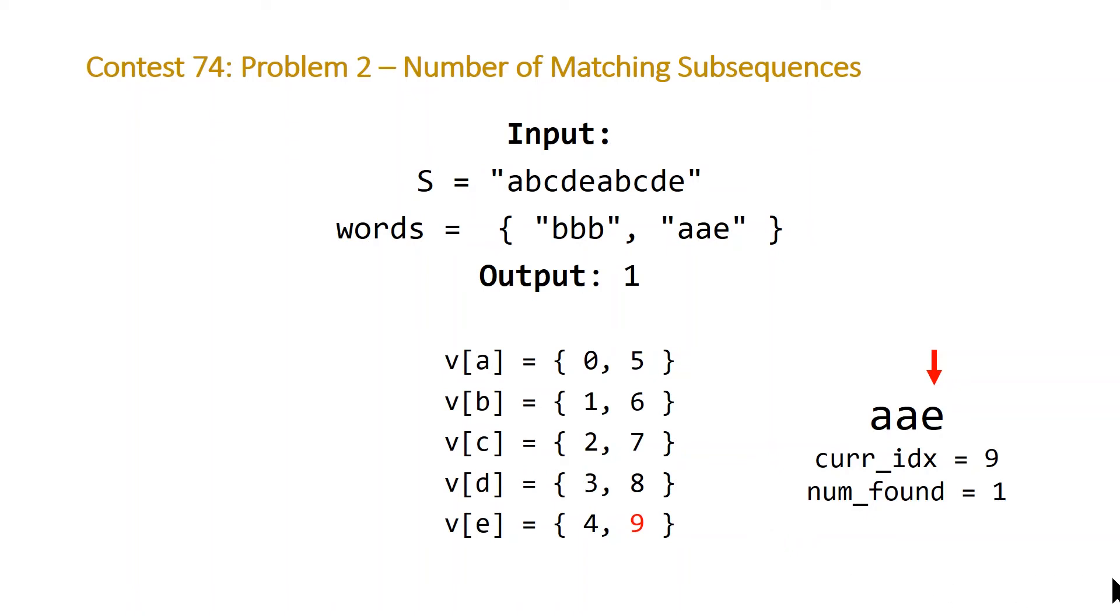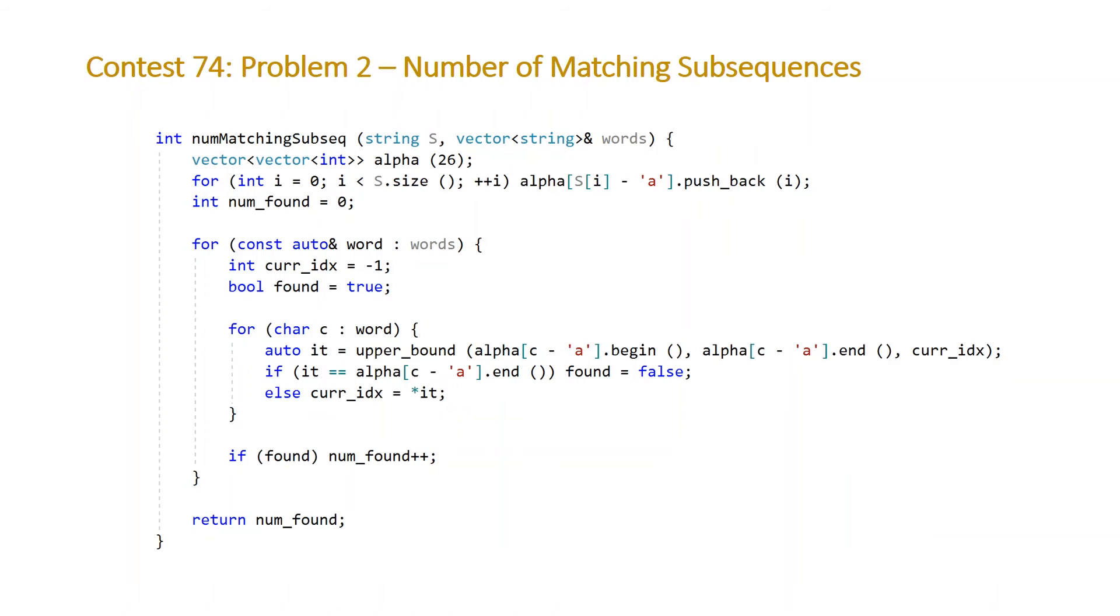So here we have our function that takes two parameters, a string s and a vector of strings words. On our first line, we're declaring our 2D vector, which will be our index map and initializing the first dimension to be length 26, which will be the number of characters in our alphabet. On the second line, we're filling our index map by looping through all the characters in s. For each character, we're going to get the corresponding index in our index map. And we do that by just subtracting the character A. So A, A minus A will give us zero, B minus A will give us one. And then for the vector that we get a reference to, we're going to push back onto it the index that we're currently at.